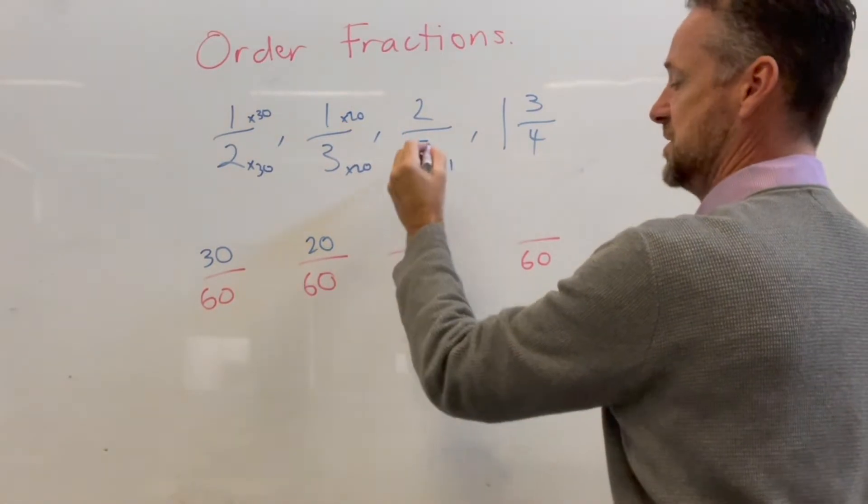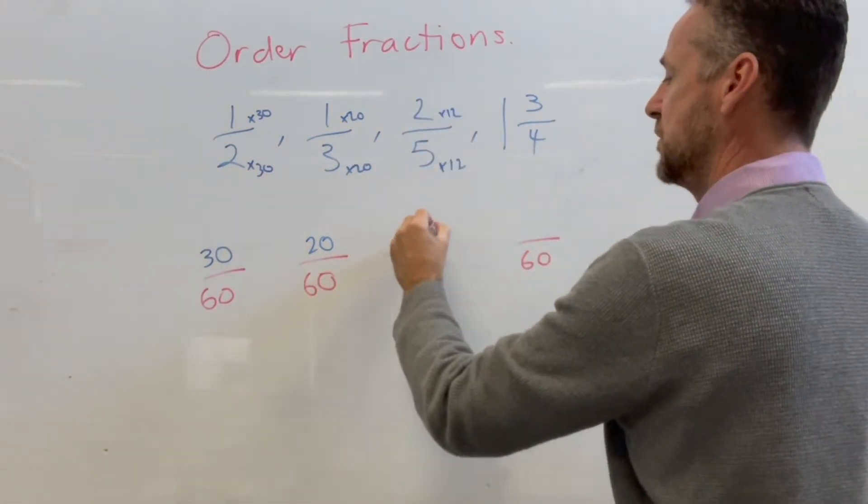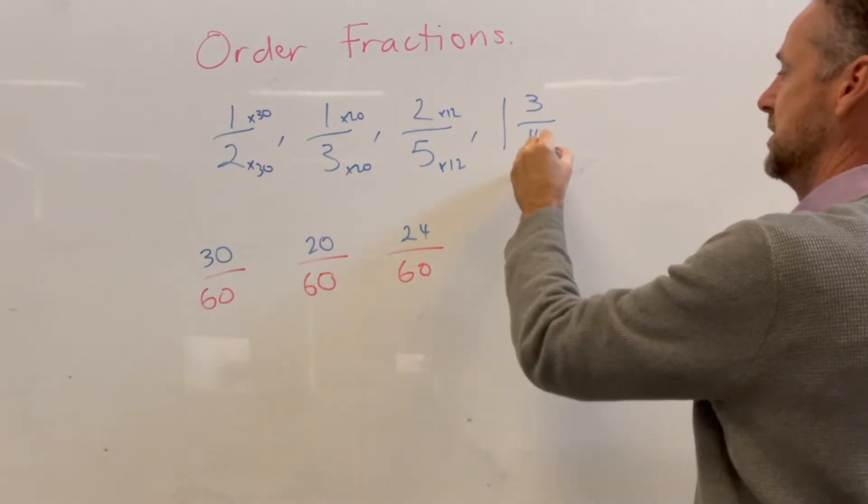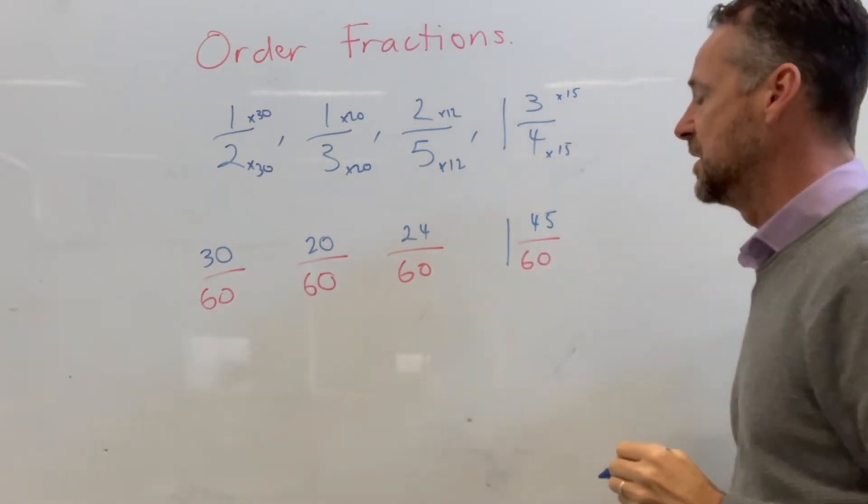Here it'll be times 12 so times 12 here gives you 24 and here it's times 15 so times 15 here is 45. Don't forget the one.